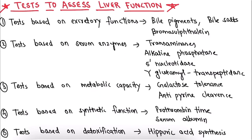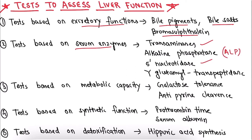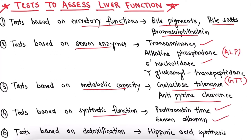Now let's study the tests to assess liver function. The first test is based on the excretory function by measurement of bile pigment, bile salts and bromosulphthalein. The second is based on serum enzymes like transaminases — AST, ALT — and alkaline phosphatase (ALP), 5-nucleotidase, and gamma glutamyl transpeptidase (GGT). The third test is based on metabolic capacity using galactose tolerance and antipyrine clearance. The fourth is based on synthetic function like prothrombin time and serum albumin. The fifth test is based on detoxification, done by hippuric acid synthesis.